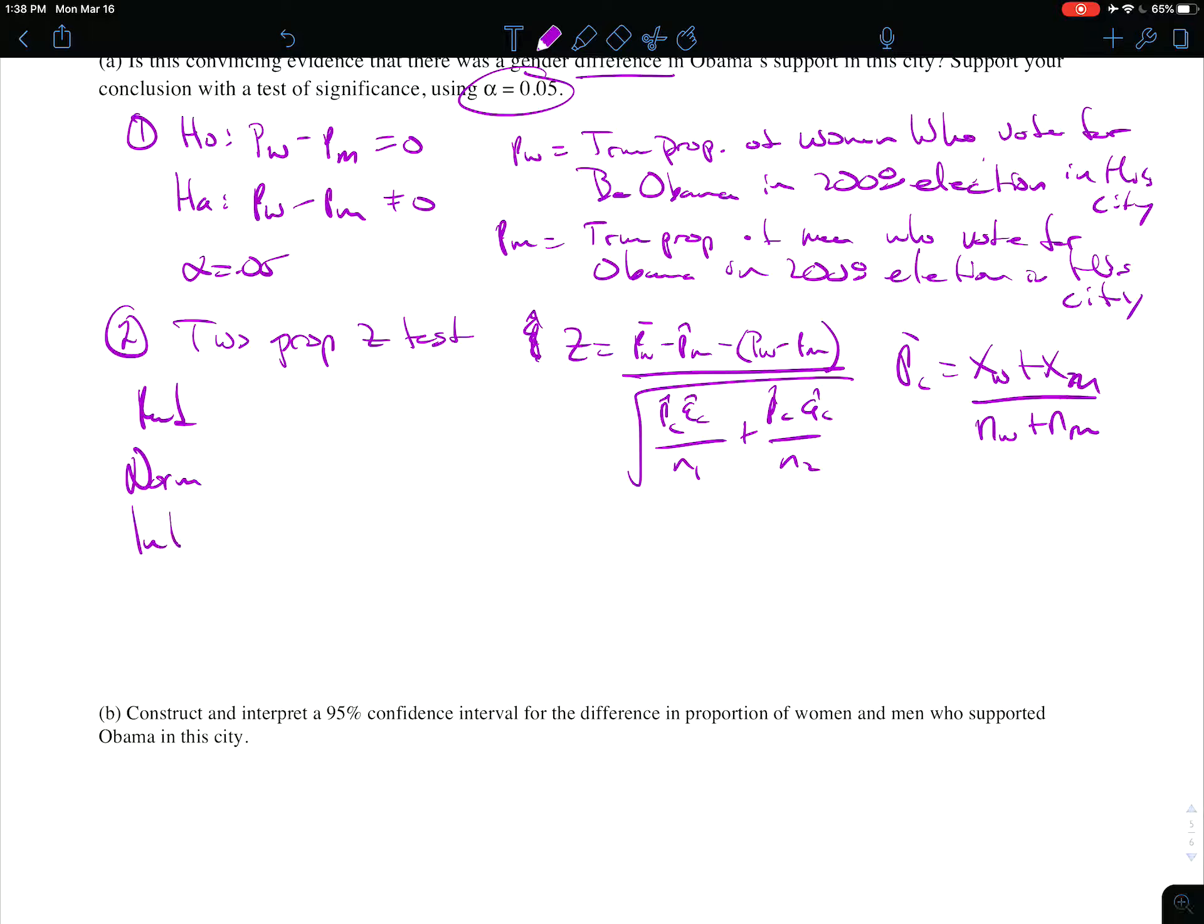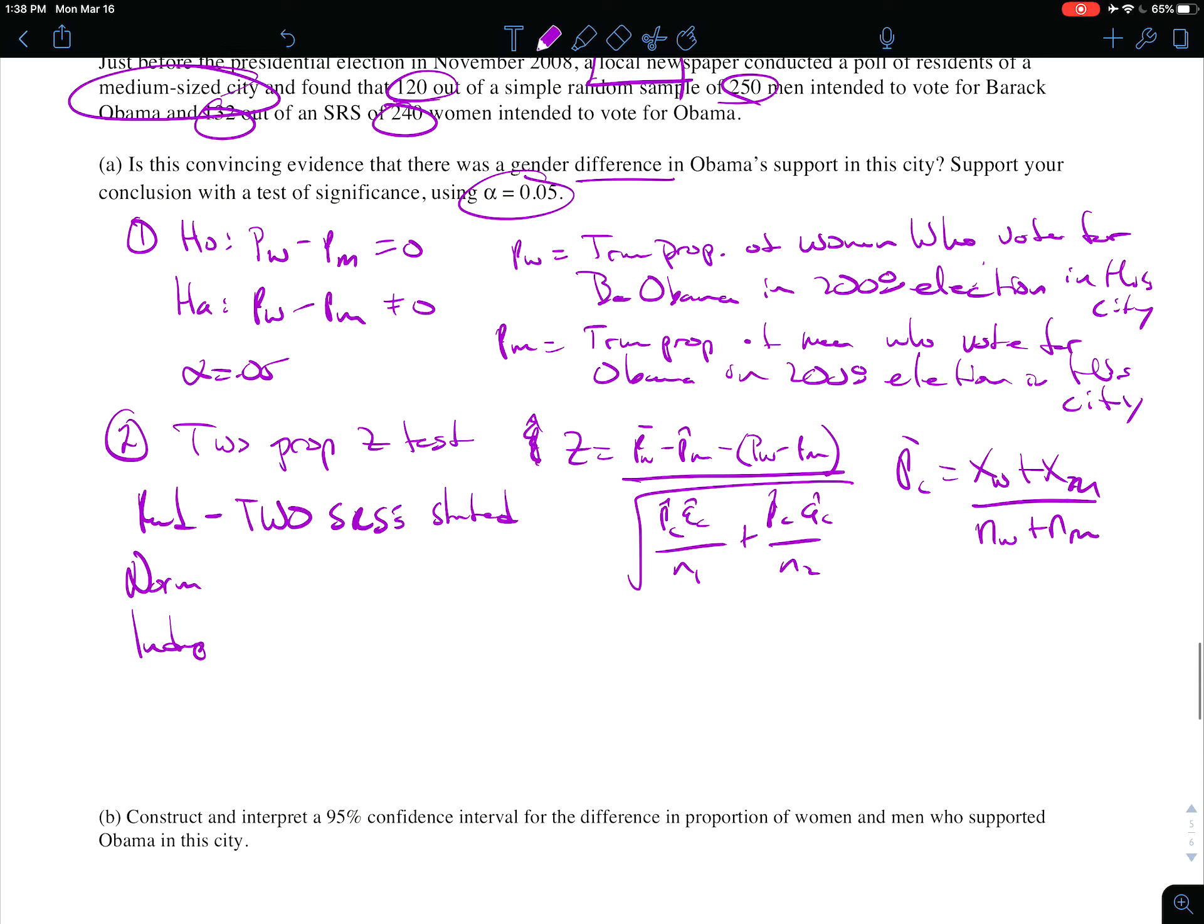Random, normal, and independent. Let's see, random: two SRS's stated. And then for our normal, the number of successes and failures. So you can use either the pooled p-hat times n, or you can use the successes and failures, because there is no null p to use. We're not saying p is something, so the only p's we have at our disposal is going to be the p-hat_c value, which is 0.514, or we could use each individual's. And since we already have those, I might as well just use the successes and failures, which are 120, 130, 132, and 108, all of which greater than or equal to 10.